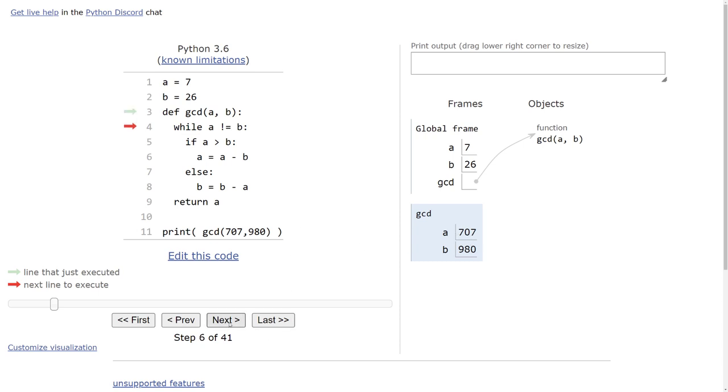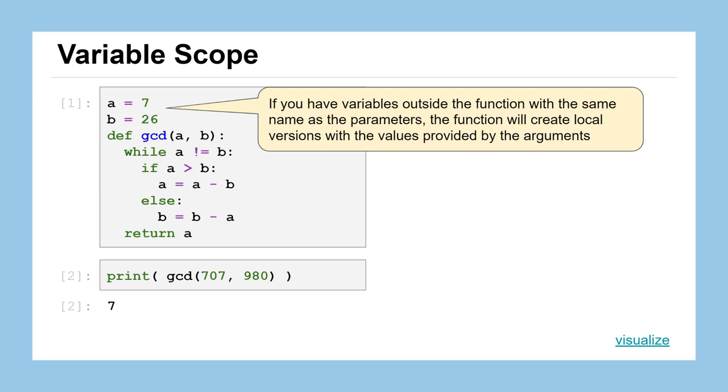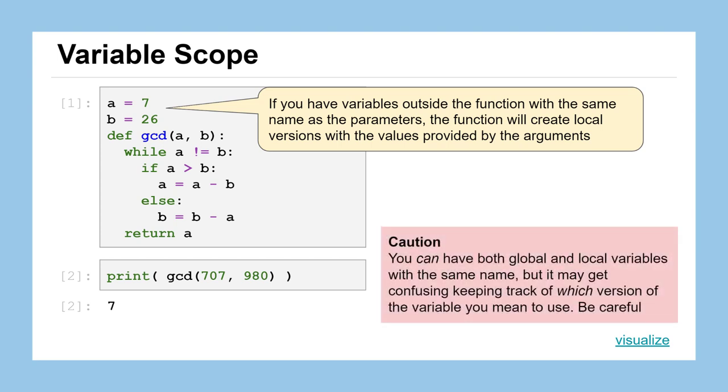So everywhere inside this function, when we refer to values A and B, it's going to be referring to the local version of those variables. And that's the default behavior for all functions in Python is that it will automatically look for the local version of the variable first. And if it exists, it will use it. If no local version of that variable exists, it will go look for a global version and see if it has a possibility to avoid an error message there. But if there's no place where that variable is assigned, it will return an error. So again, if you have variables outside the function with the same name as the parameters, the function will create local versions with those values provided by the arguments. And while you can do this have both global and local variables with the same name, it often gets confusing trying to keep track of which version the variable you meaning to use in certain situations. So just be careful and as best you can, try not to use the same names in both places when you're writing your code.